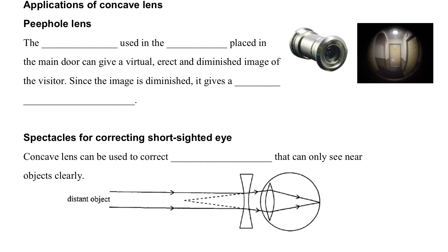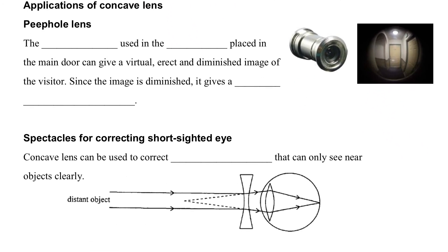So comes to some applications of the concave lens. The first application is the peephole. The peephole uses a concave lens placed on the door. Usually it's a small hole for the user to look through the door. And the concave lens is able to provide a larger field of view so the person can see more things outside the door through the peephole.